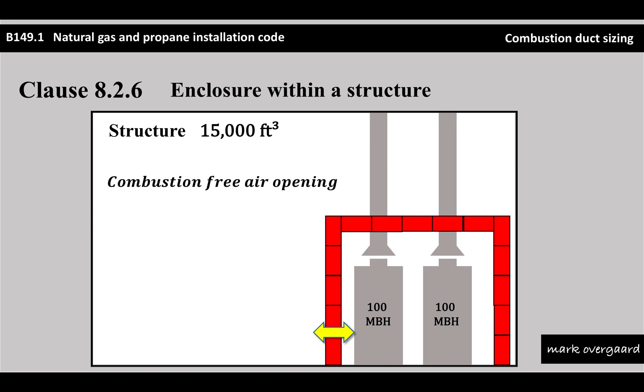If we do a calculation for our combustion-free area opening, you would take the total input divided by 1,000 BTUs per inch squared - that's how much we need. So you'd go 200,000 divided by 1,000, and we'd end up with 200 square inches. That's going to be the size of that opening down there. So far, so good.